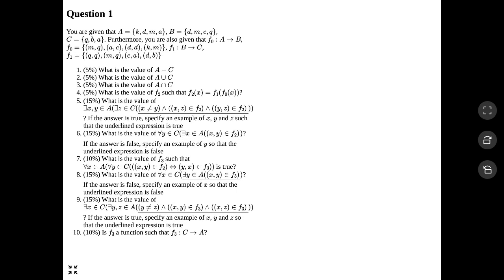I'm going to maximize the screen and use my tablet. I printed the document with extra space on the right-hand side so I can hand-write stuff. The question gives us: set A has four elements — K, D, M, A; set B has four elements — D, M, C, Q; set C has three elements — Q, B, and A. F0 is a function with A as domain and B as codomain, with its exact mapping given. F1 uses B as domain and C as codomain, with its mapping also given.